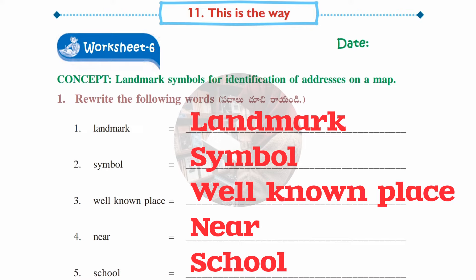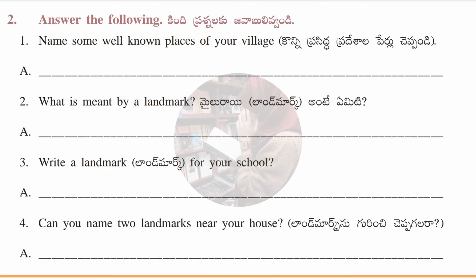Worksheet number six — concept is 'Landmark System for Identification of Addresses on a Map.' In the first section, rewrite these words with a capital first letter: Landmark, Symbol, Well-Known Place, Near, and School.